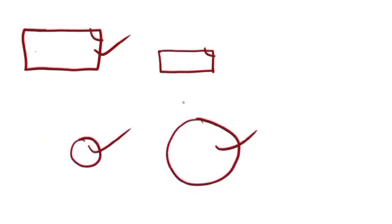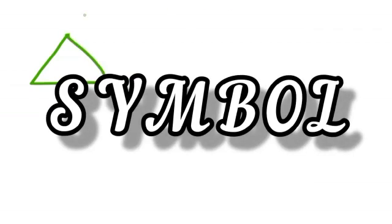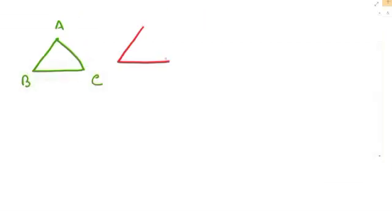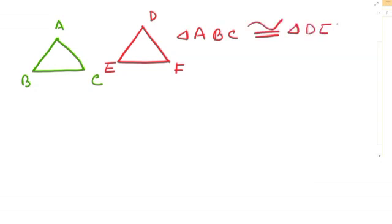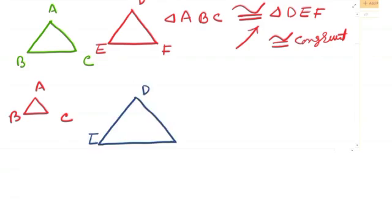Let's look at the symbols. For two congruent triangles, we read: triangle ABC is congruent to triangle DEF, and this is the symbol of congruence. For two similar triangles, we read: triangle ABC is similar to triangle DEF, and this is the symbol of similarity.